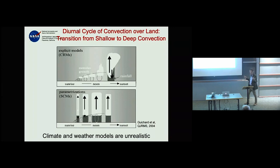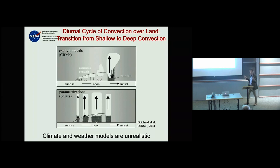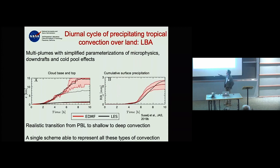What we tried to do to represent this transition was to introduce a very simple parameterization of microphysics inside the plumes, and some simple parameterization of downdrafts and what we call cold plumes.